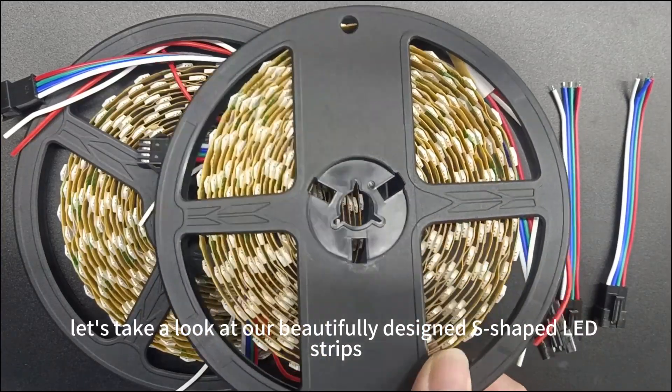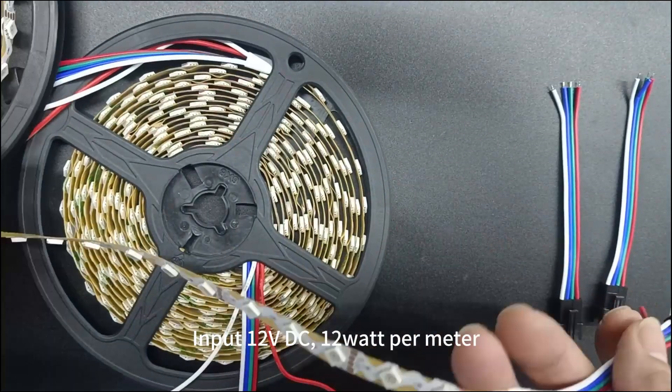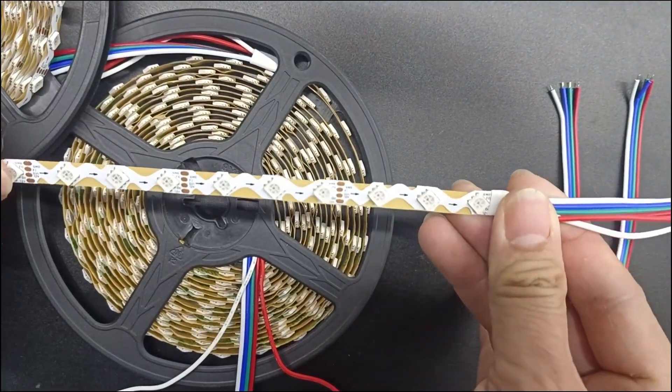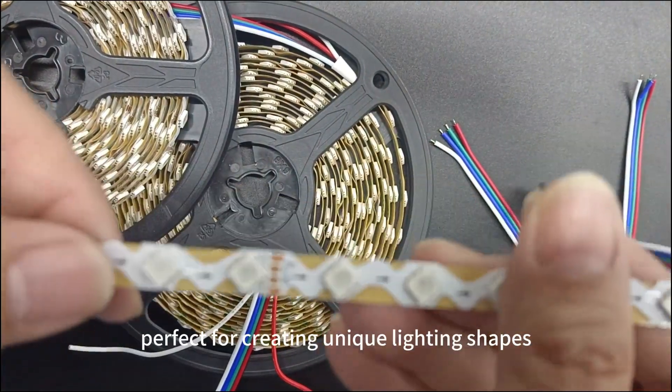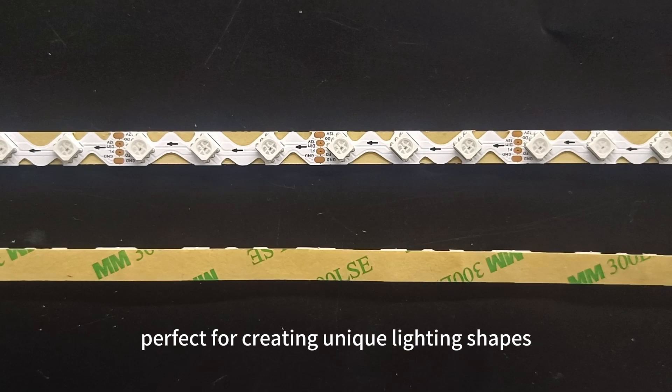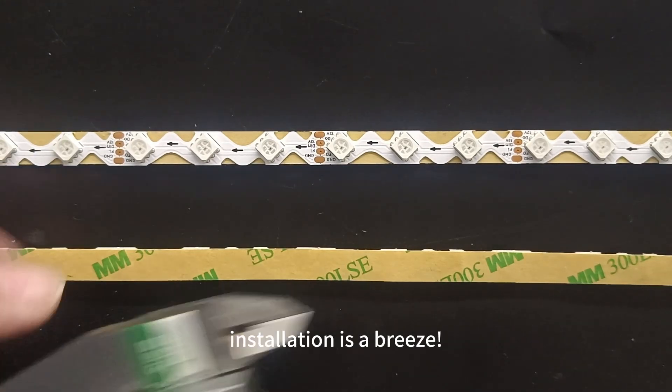Next, let's take a look at our beautifully designed S-shaped LED strips. Input 12V DC, 12W per meter, IC type is SK6812. They can be bent both horizontally and vertically, perfect for creating unique lighting shapes. Plus, with the original 3M adhesive backing, installation is a breeze.